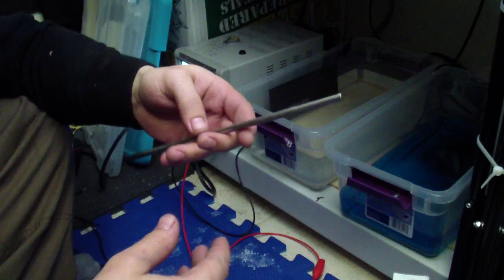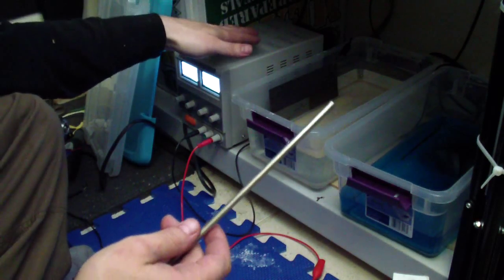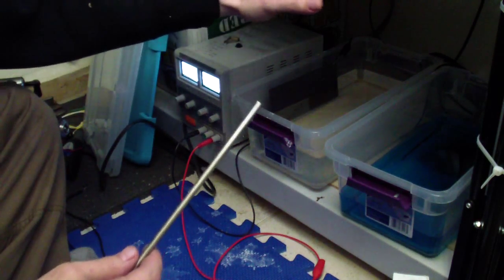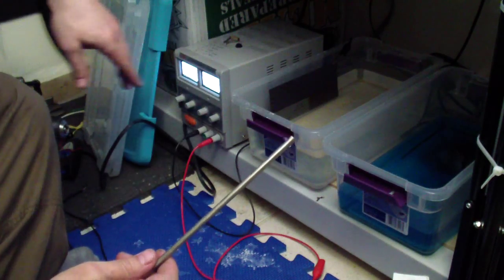The other more convenient, more controlled method is electroanodizing. Very simple DC power supply, variable. I use Windex just for cleaning and it brings out the colors a lot better.